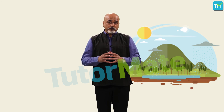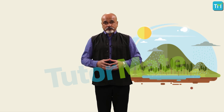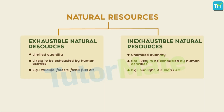Natural resources, which form the living and non-living components of nature, are used by us to meet our requirements. They are of two types: inexhaustible natural resources and exhaustible resources. Inexhaustible natural resources are available in such abundance that they do not get exhausted even when used continuously. Some examples are air, water, and solar energy.